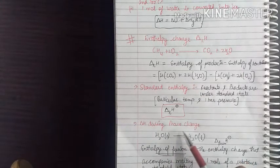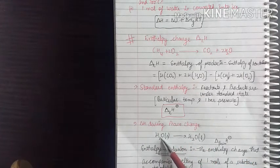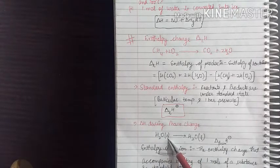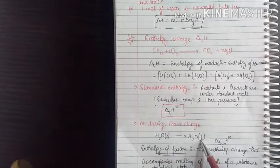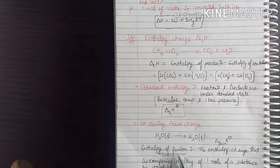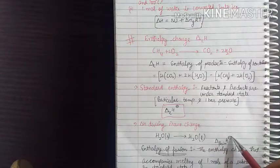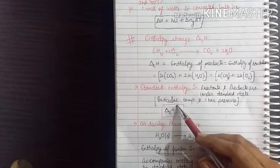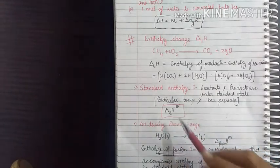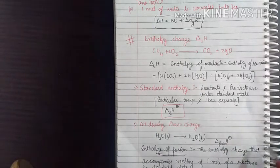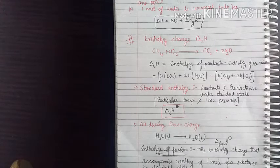Delta H during phase change: for example, water in the solid state — ice form — converting to liquid state. This is the enthalpy of fusion, denoted delta fusion H at standard state. It is the enthalpy change that accompanies the melting of 1 mole of a substance in its standard state.